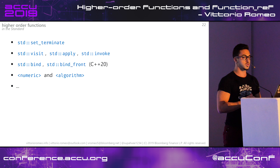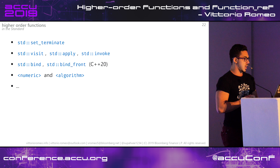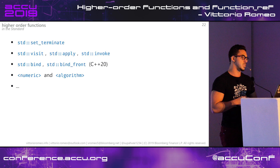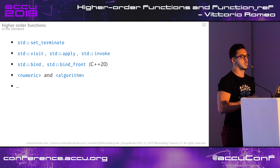In the C++ standard we have algorithms and numeric headers. We have set_terminate that takes a handler for terminate calls. Visit, apply, and invoke are utilities you can use with variant and tuple for callables that act on those objects. And bind and bind_front are examples of higher-order functions that return something you can call - you can bind some arguments and get back a closure with bound arguments.